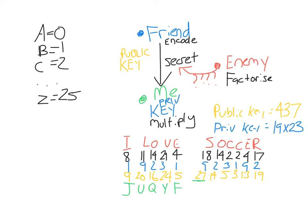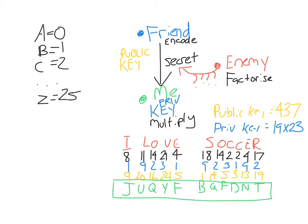One number comes out as 27, but there are only 26 letters in the alphabet — they only go from 0 to 25. If you get a number that's too big, you just subtract 26 from that number, so 27 becomes 1, which is B. I keep doing this for the rest of them. Now I have a message in green that is gibberish — if you just received this message and nothing else, you wouldn't know it says 'I love soccer.'